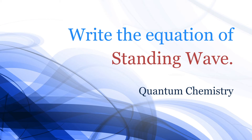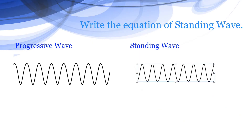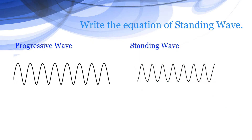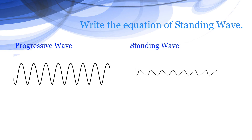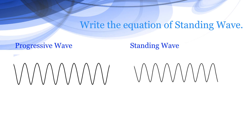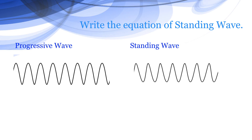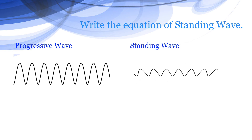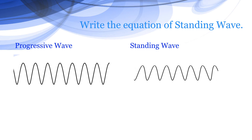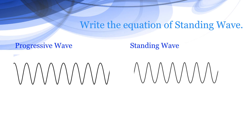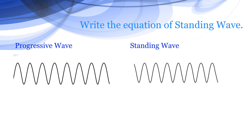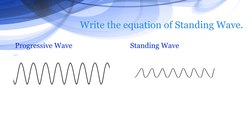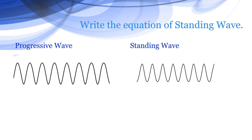We will write the equation of standing waves. There are two types of waves: one is progressive wave and the second is standing wave. A progressive wave moves in one direction, while standing waves vibrate on the same place.